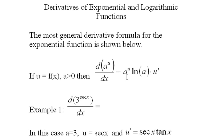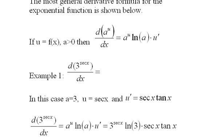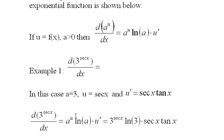Because we have this formula, we can directly write the answer down. I've re-typed the problem and put the formula here. A to the u is three to the secant x, the log of a is ln three, and u prime is secant tan x — and you're done.